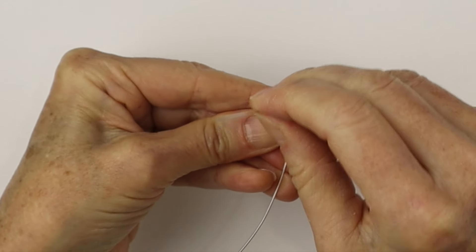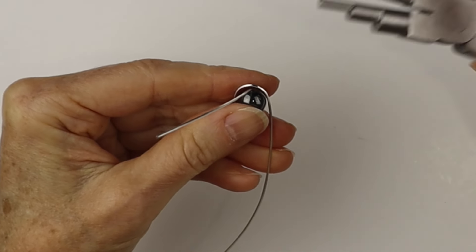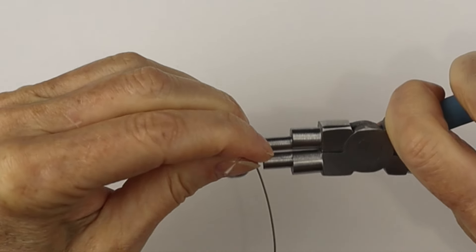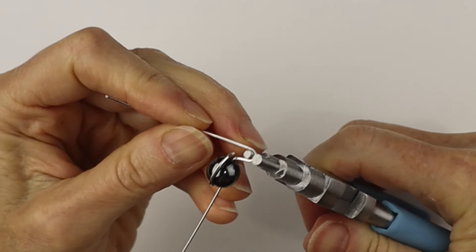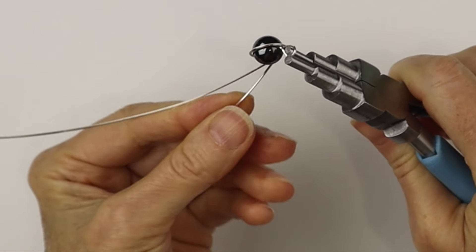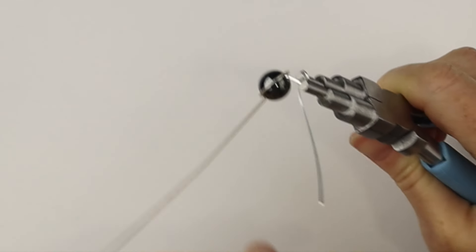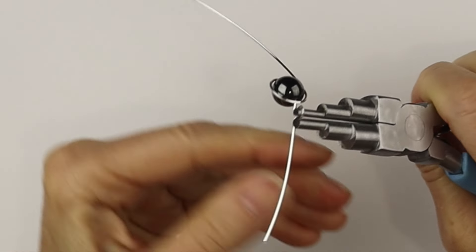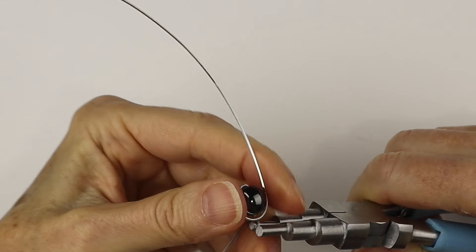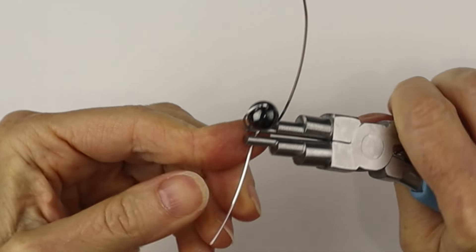Then we're going to bend the vertical wire forward and take our bail making pliers and bring the wire around right around one full time, adjust it, and then we're going to bring it around again.